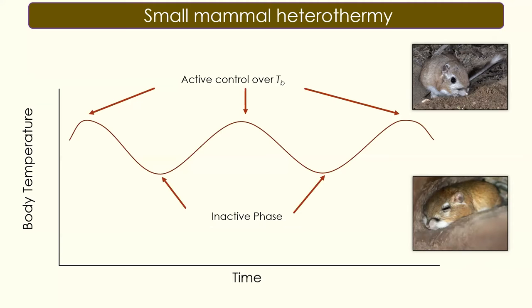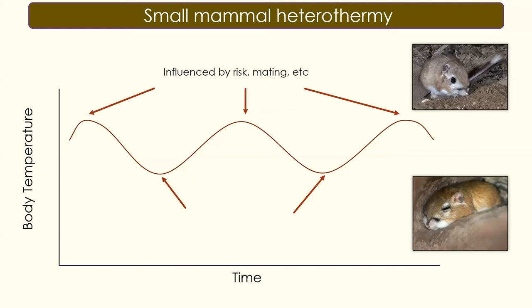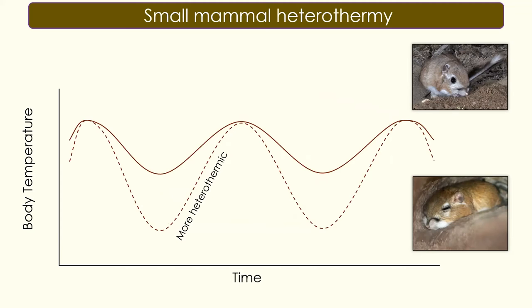Active control over body temperature is determined and influenced by a plethora of complex decision-making processes, and a lot of that is determined by risk — the risk of foraging, the risk of mating, the risk of predation. Anybody who's been around a small rodent will realize how skittish they are; they're just assessing risk to themselves. During inactive phases, there's more influence by daily and ambient temperature, and it's a mixture of these active periods, decision-making, and environment that determines how heterothermic an animal will be.